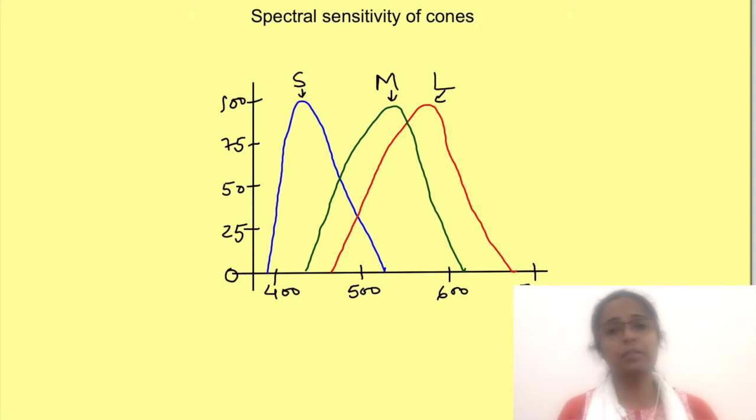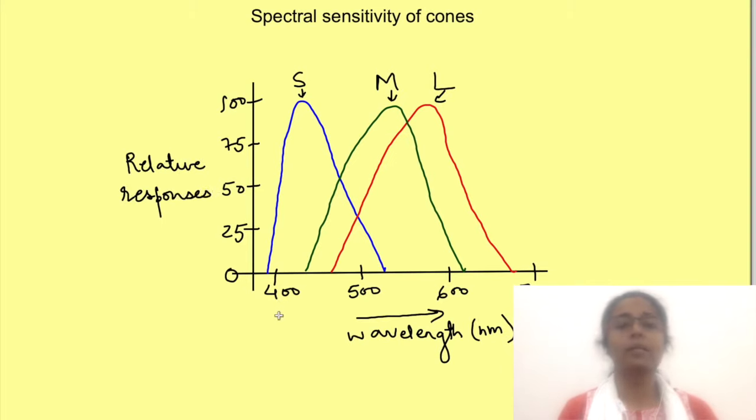This is better understood by looking at a spectral sensitivity graph of different cones. This graph shows the relative responses of cones to photons from different wavelengths. Here x-axis shows the wavelength of light in nanometers while the y-axis shows the relative responses of the cones. See here the S cones respond to shorter wavelength with peak response at 445 nanometers of wavelength but there are lesser responses at other wavelengths also. Similar is the case with M and L cones. Peak response of M cones is at 535 nanometers while that of L cones is 570 nanometers.